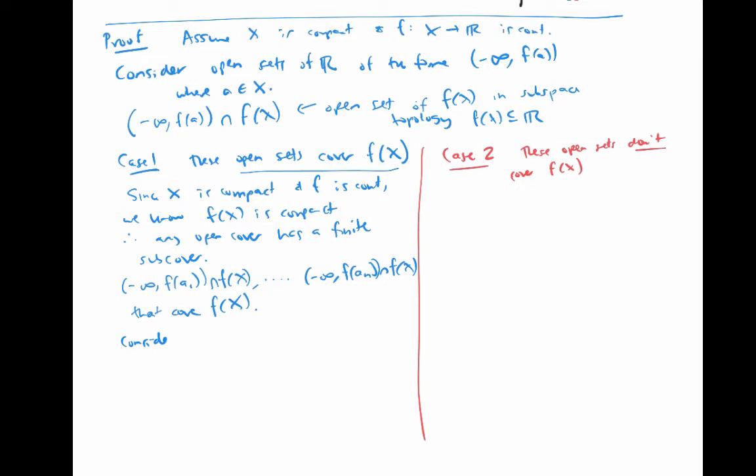Consider the maximum number between f of a sub one through f of a sub n. There has to be a maximum one, because there are just finitely many. Of course, it could be a tie, but it'll still be a maximum.